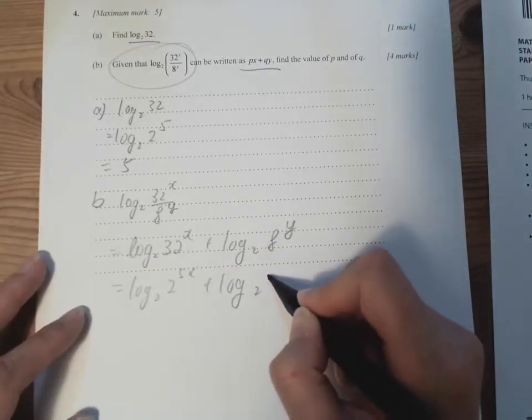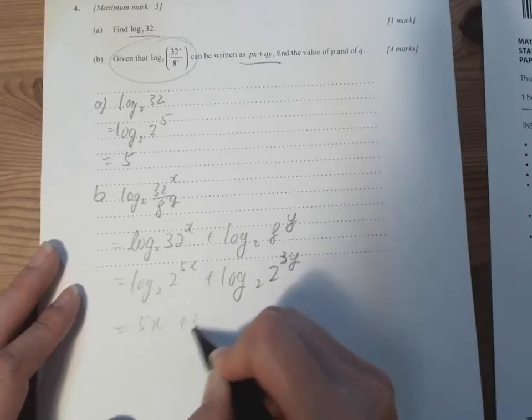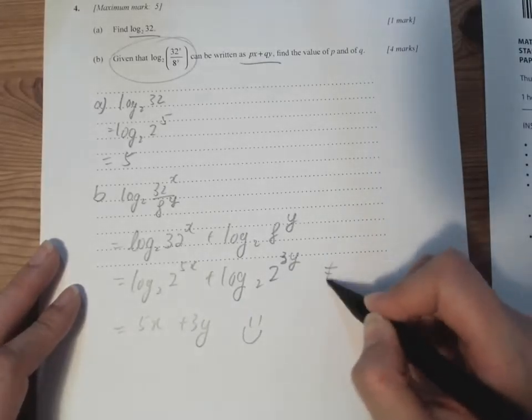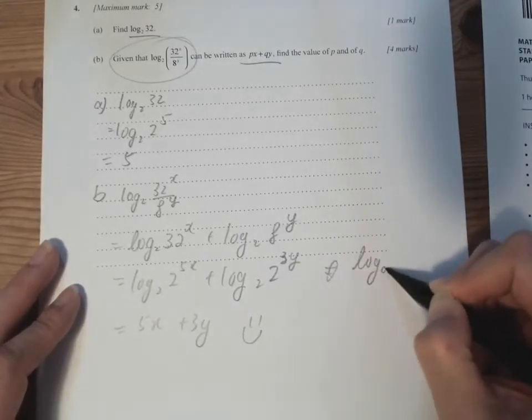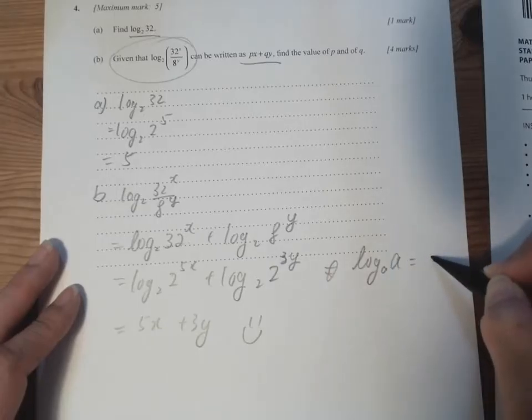And then we have 5x plus 3y. And this is just for your information, log a, a equals to 1.